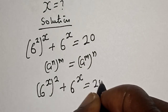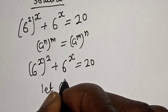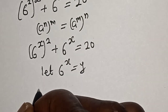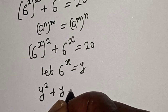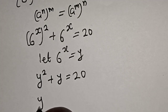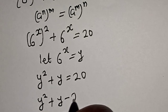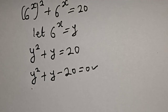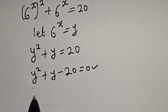Applying that rule, we have 6 raised to power 2s plus 6 raised to power s is equal to 20. Now let 6 raised to power s equal y. Then we have y squared plus y is equal to 20. Bringing 20 to this side, we have y squared plus y minus 20 is equal to zero.